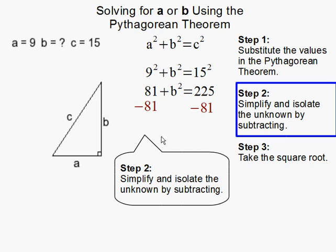Then our next step is to isolate our unknown variable, which is B². And in order to do so, we must get rid of this 81. So, I'm going to subtract 81 here. And to balance the equation, I have to do the same on the other side of the equal sign. 81 subtract 81, that goes away. And 225 subtract 81 is 144.